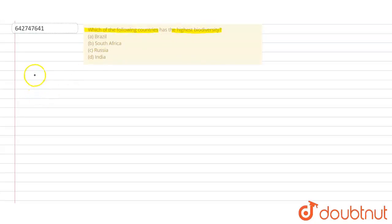Okay, so let's talk about each and every option. Let's start with Brazil. Brazil basically has the highest biodiversity. It is the country which has the highest biodiversity. Why am I saying that?